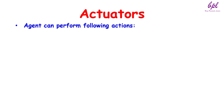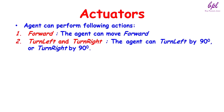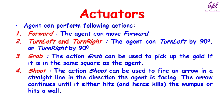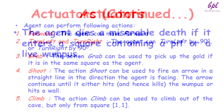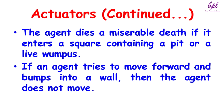Actuators — the agent can perform the following actions: Forward (the agent can move forward), Turn Left and Turn Right (the agent can turn left or right by 90 degrees), Grab (to pick up the gold if it is in the same square as the agent), Shoot (to fire an arrow in a straight line in the direction the agent is facing — the arrow continues until it either hits and kills the Wumpus or hits the wall), and Climb (to climb out of the cave, but only from square 1,1). The agent dies if it enters a square containing a pit or a live Wumpus. If an agent tries to move forward and bumps into a wall, the agent does not move.